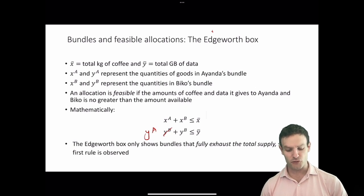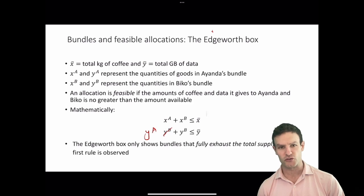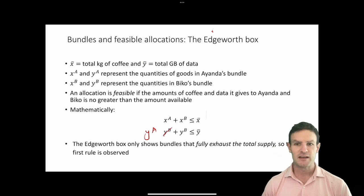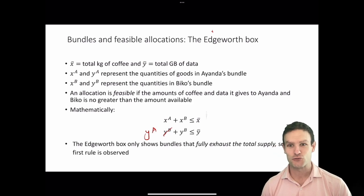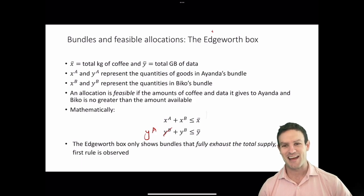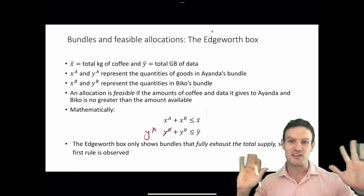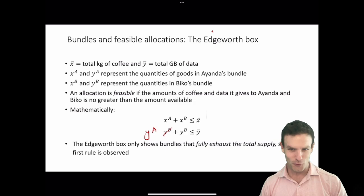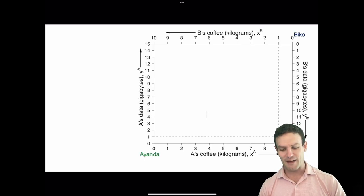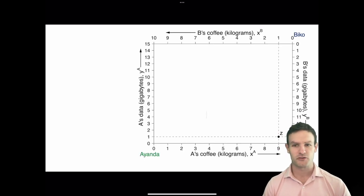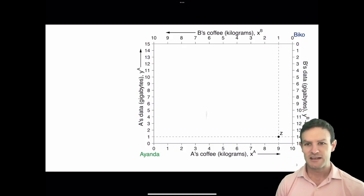The Edgeworth box only shows bundles that fully exhaust the total supply, so that the rule that nothing gets thrown away is observed. Here we have an Edgeworth box — let me move so you can see what I'm talking about.